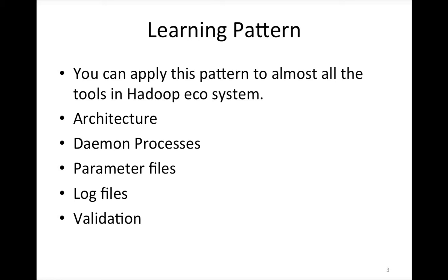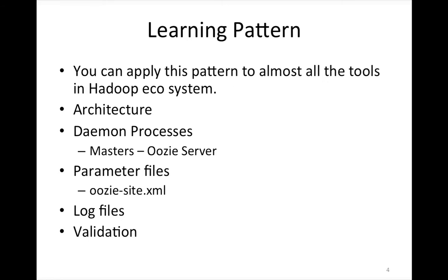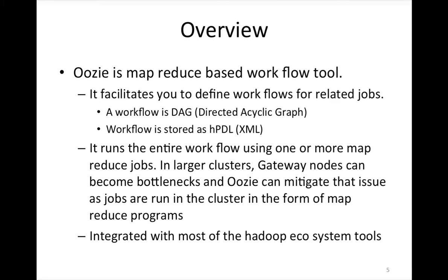For daemon processes, we have something called the Oozie server, and we also need a database because Oozie stores workflows in XML files in a database. The Oozie-site.xml is the parameter file. We are following the same learning pattern as before: understanding the architecture, daemon processes, parameter files, log files, and running a demo to validate the setup.